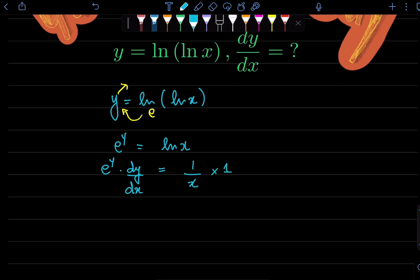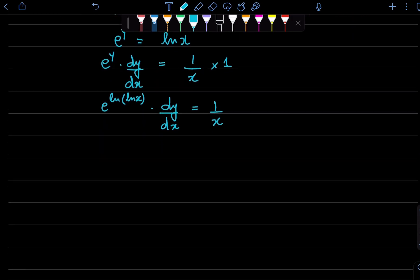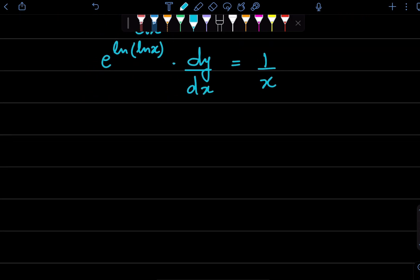Now we have e raised to power y, and if you remember y was equal to ln of ln x, times dy/dx is equal to 1 over x. By property of exponentials, e raised to power ln of ln x would be equal to ln x times dy/dx that would be equal to 1 over x.